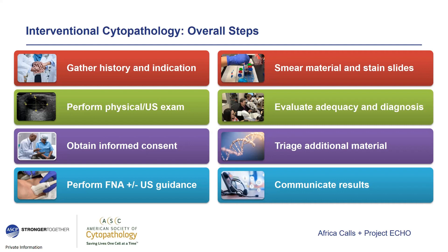Next, you smear the material acquired in the needle and stain those slides. The goal is to make every cell tell—a quote from Gary Gill, a well-known cytotechnologist—really optimizing cytopreparation so that cells can be as informative as possible. You then evaluate for adequacy and give a preliminary diagnosis. Counting the number of cells is not enough; not everyone can determine the significance of those cells, as contamination with benign or irrelevant cells won't help. Once you have a preliminary diagnosis, triage additional material as needed, then communicate results to the patient and other healthcare providers.